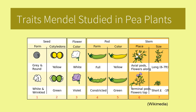He started all his crosses with seeds that breed true, which we now know means the parents were homozygous, or had identical alleles for the trait he was observing. We will focus on two of these traits: seed form and seed color.